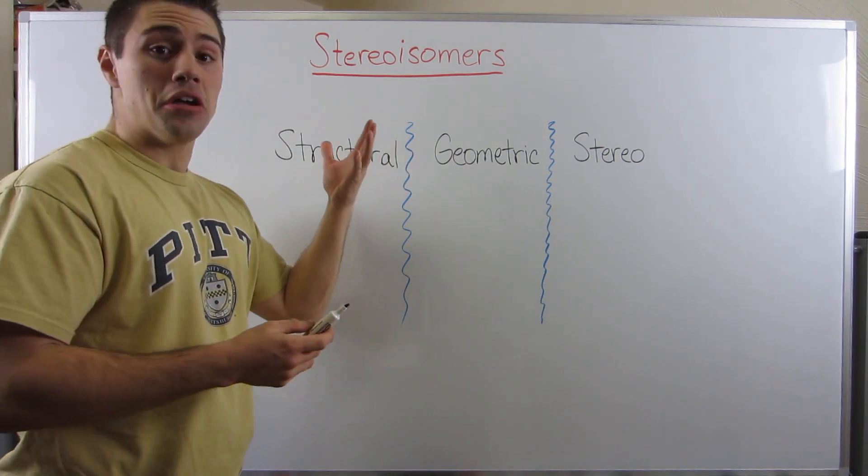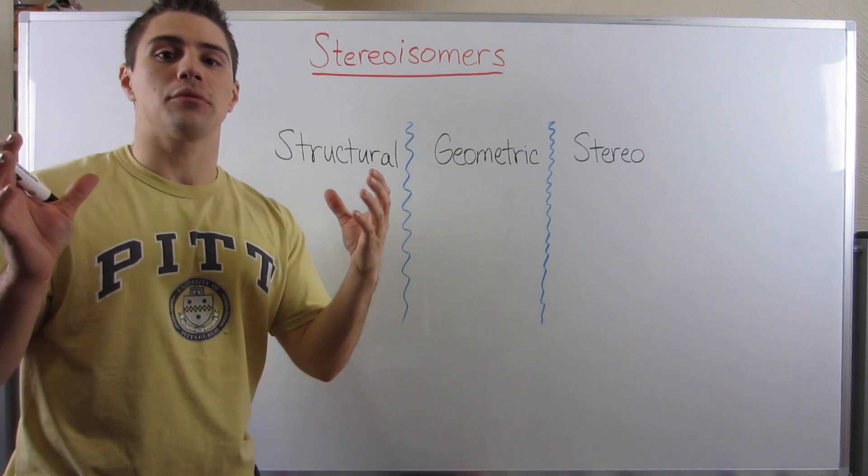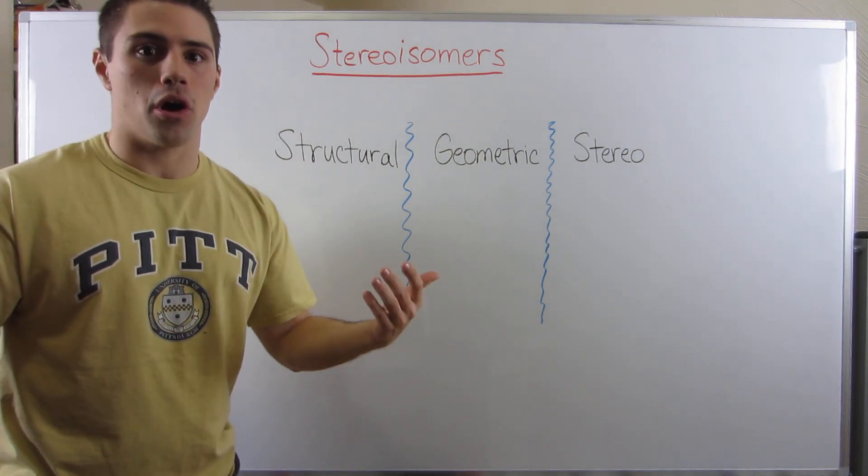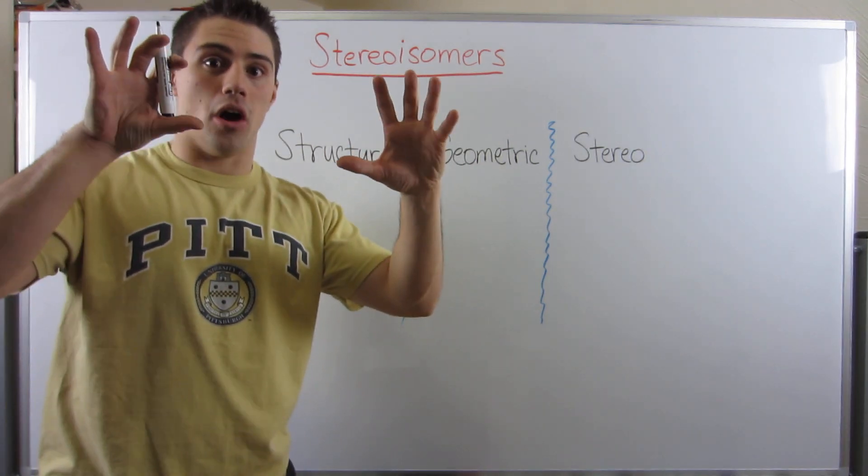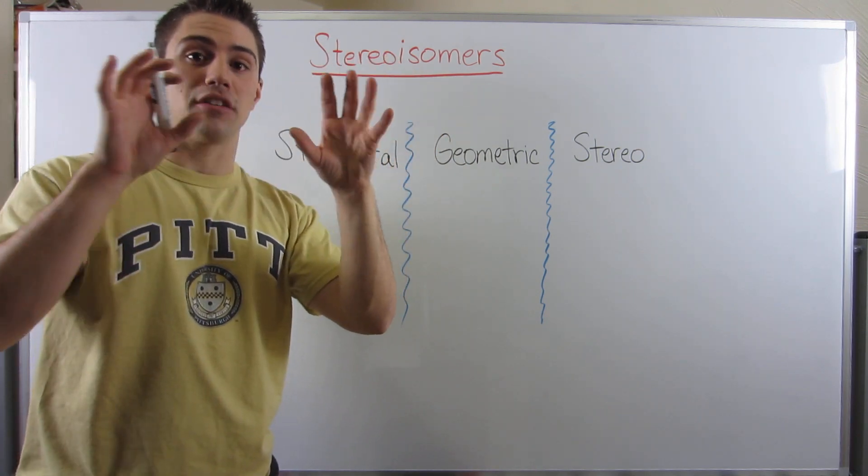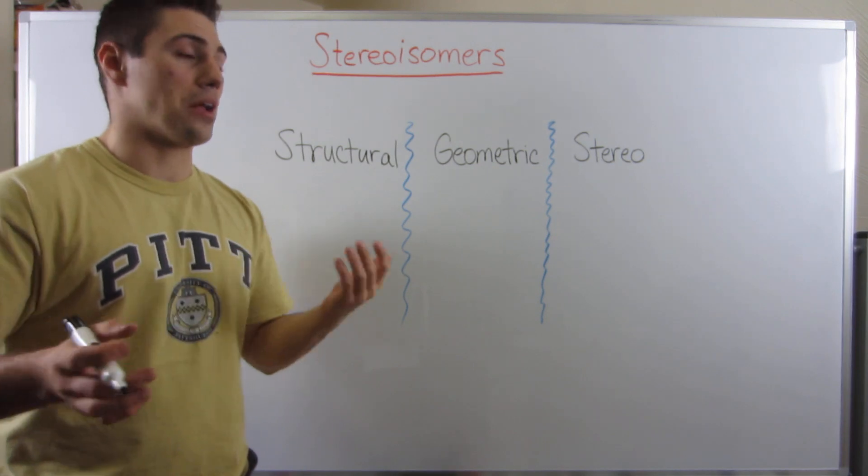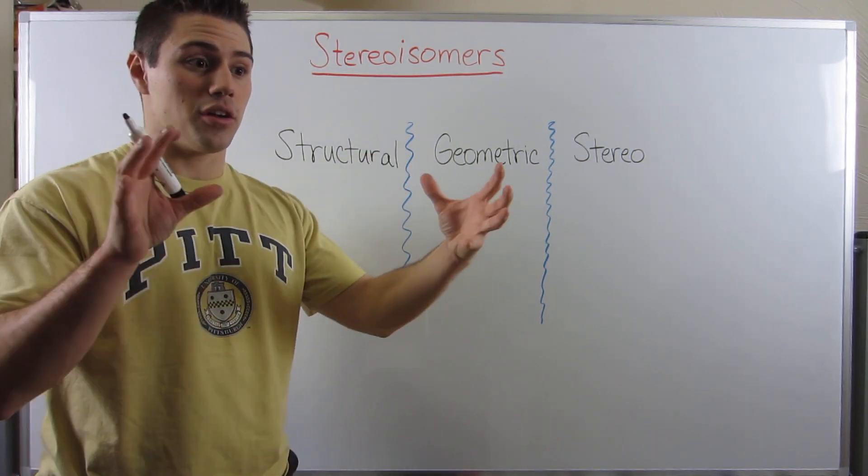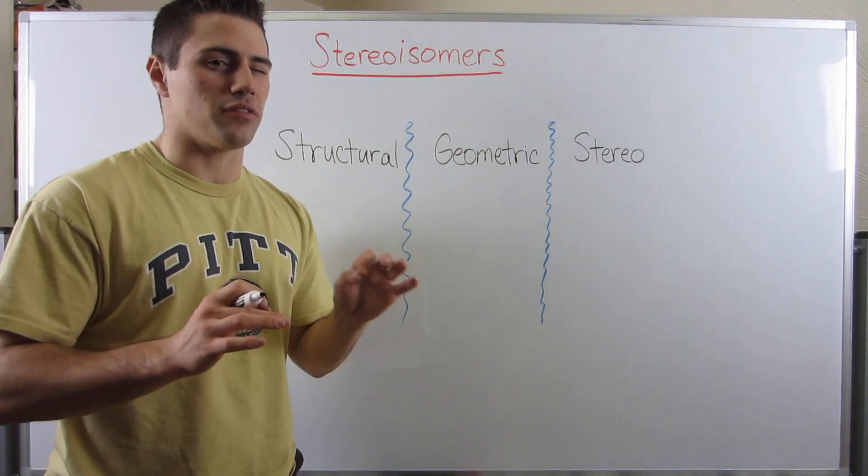The next step in stereochemistry is to talk about how to identify relationships between molecules. Honestly, this isn't hard - it's basically just assigning R and S to a pair of molecules, comparing the different stereocenter configurations, and then applying a name to it. This is going to be a relatively quick video.